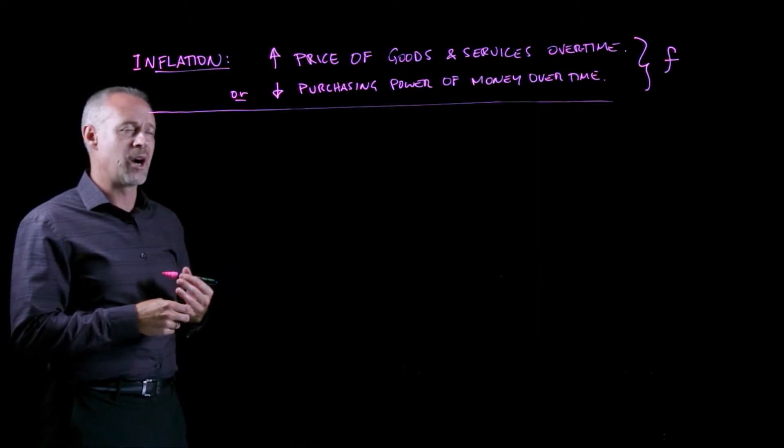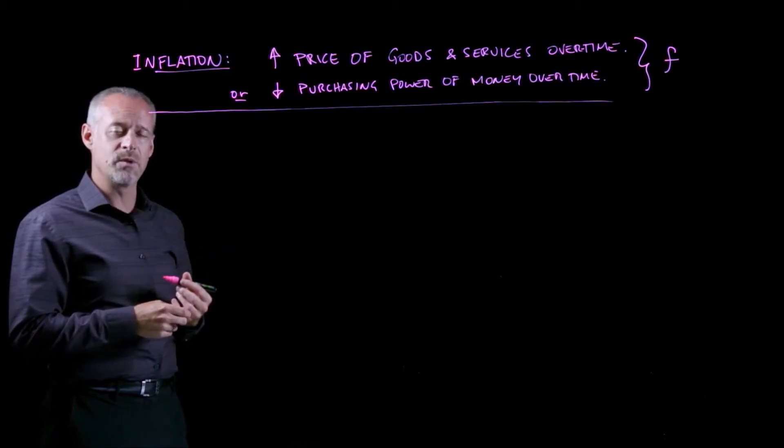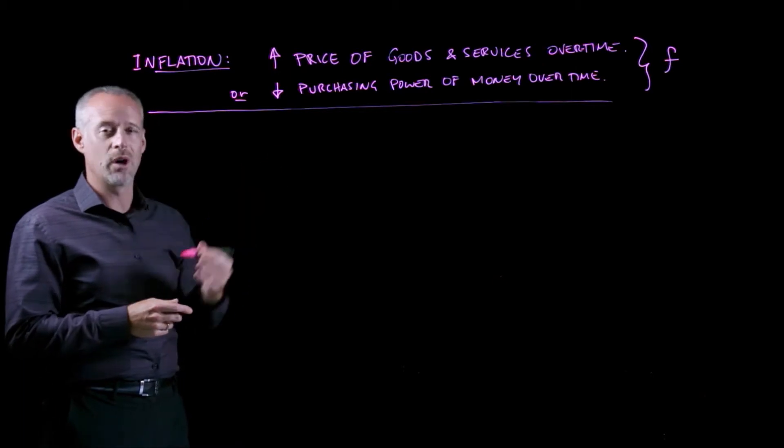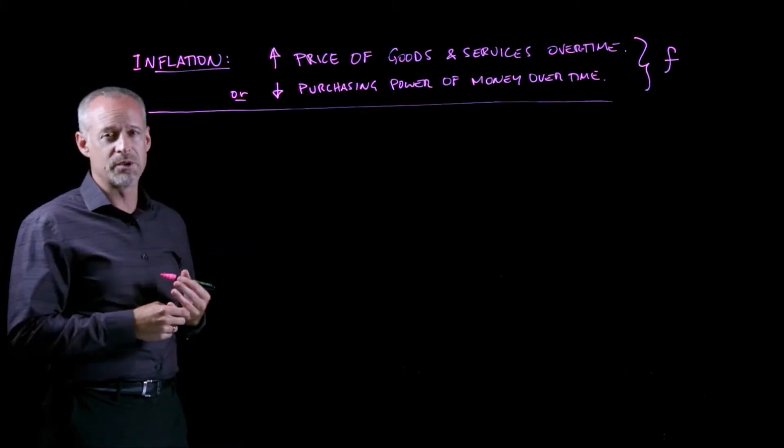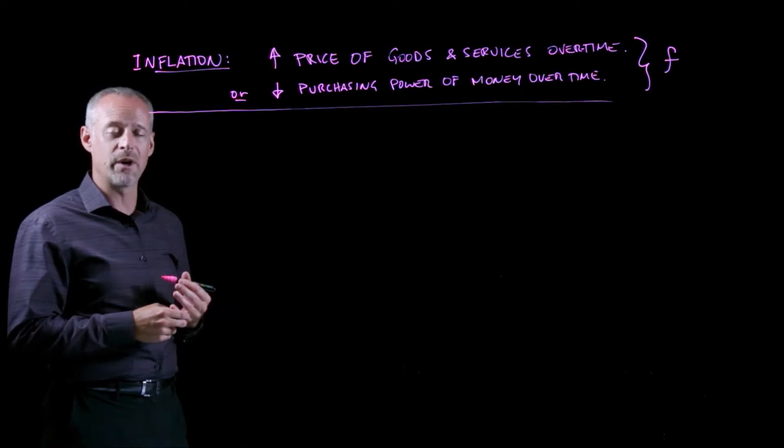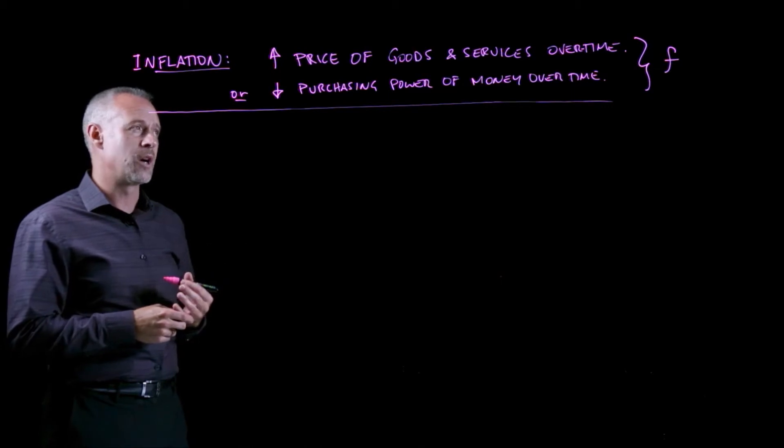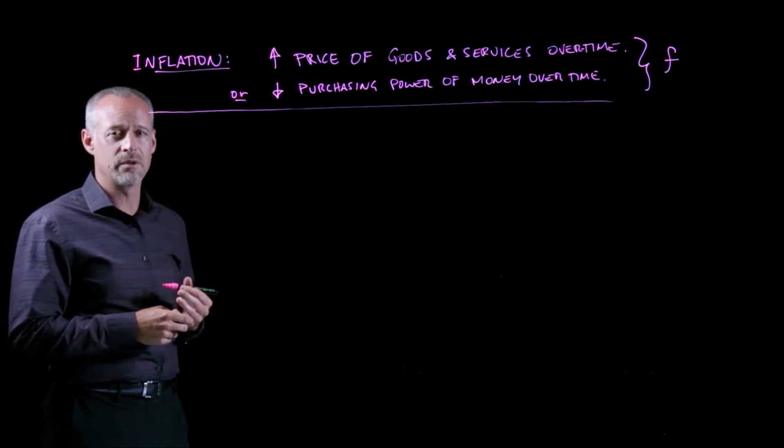By looking at the consumer price index, we can calculate the value of F, or inflation. Your text will describe in more detail how something like a consumer price index is used to calculate inflation, but for our purposes today, we're just going to talk about the value of F.